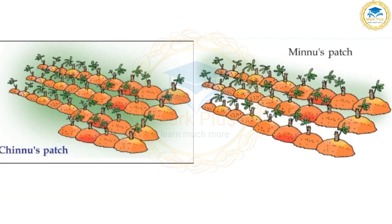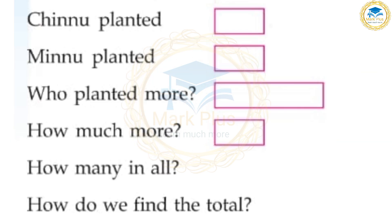Chinnu planted — how many? 34. Then Minnu planted — how many? 28. Who planted more? Chinnu planted 6 more.